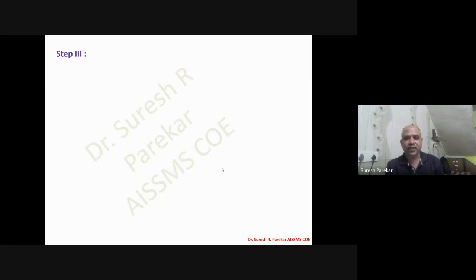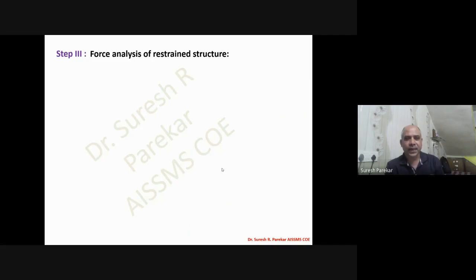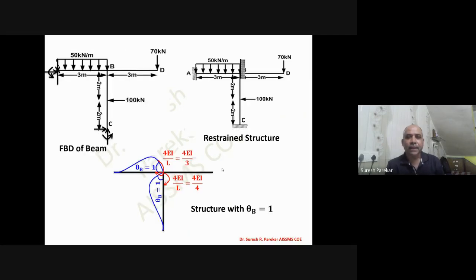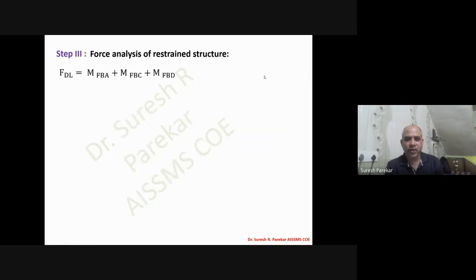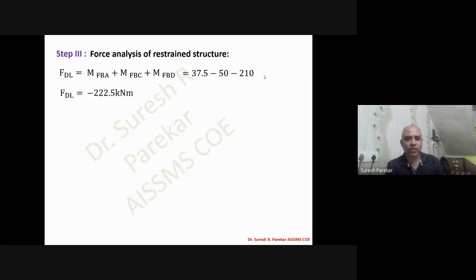In the force analysis of the restraint structure, FDL equals MF_BA + MF_BC + MF_BD. At joint B we have three fixed end moments: MF_BA = 37.5, MF_BC = minus 50, and MF_BD = minus 210, giving FDL = minus 222.5 kN·m.